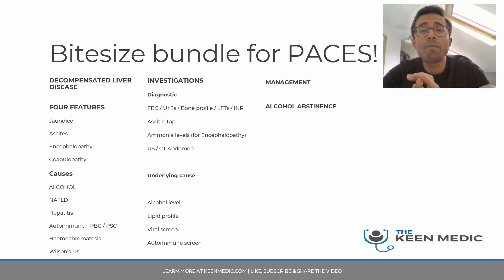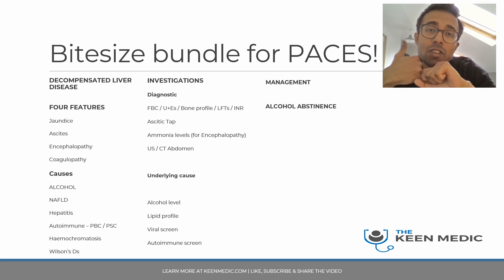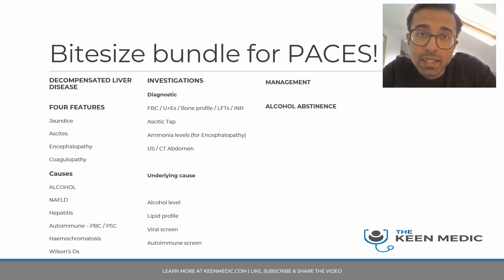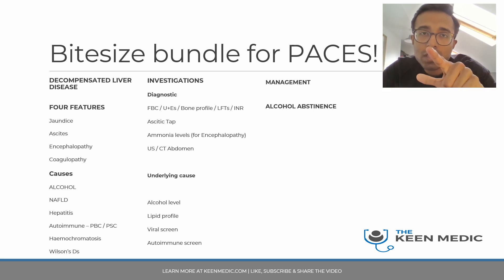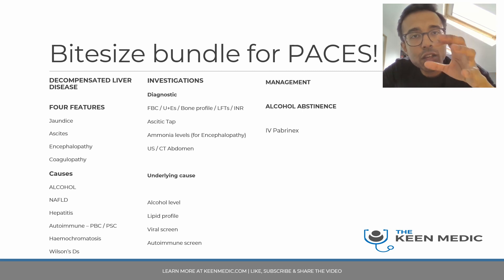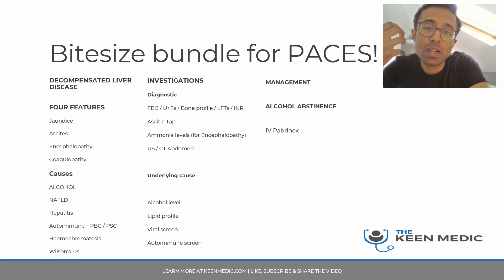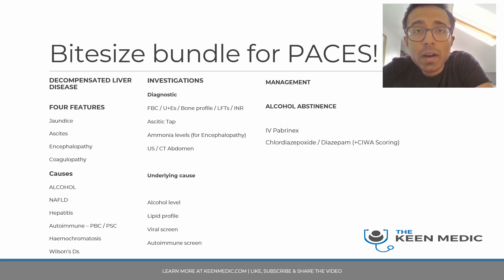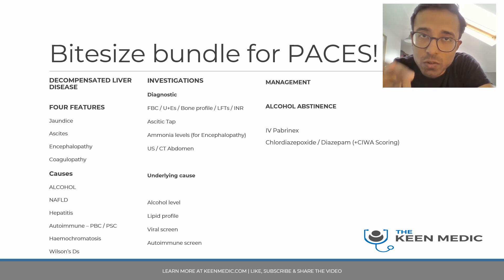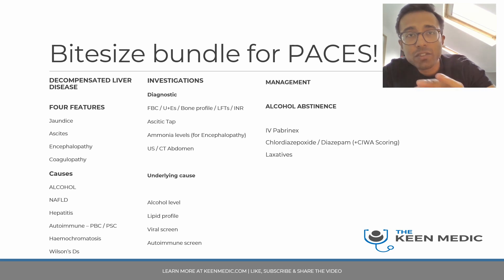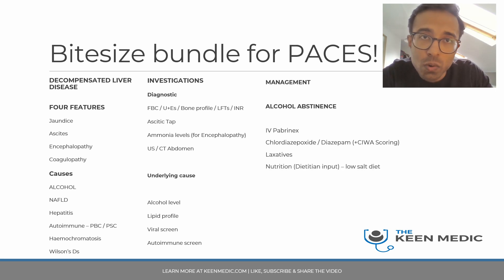For management, there are three main components. First and most important: alcohol abstinence. Get the alcohol liaison team involved if the patient is willing to cut down or stop. On the acute side: IV Pabrinex first for vitamin supplementation, followed by chlordiazepoxide or diazepam for alcohol withdrawal, with CIWA scoring by nurses to grade withdrawal. Give laxatives to ensure regular bowel opening — failure to do so risks hepatic encephalopathy.